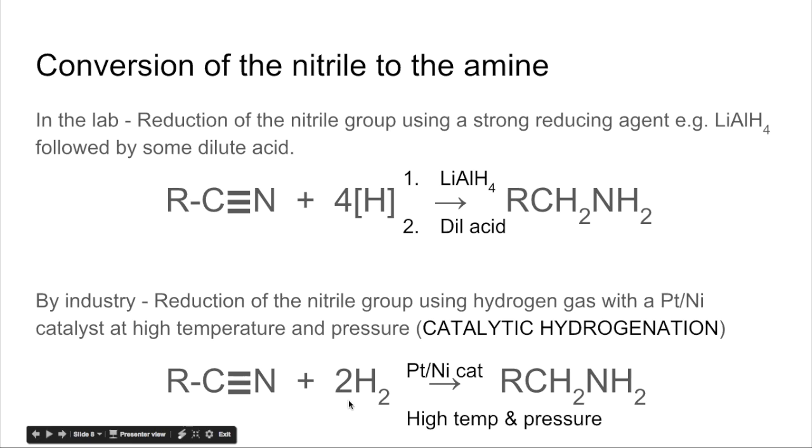And they use a catalyst which can either be platinum or nickel, and they use a high temperature and pressure. So this is known as catalytic hydrogenation because we're reacting the nitrile with hydrogen now. So instead of four separate Hs, we have two moles of H2. So platinum or nickel catalyst, high temperature and pressure. Put your conditions around the arrow. And there's your product.